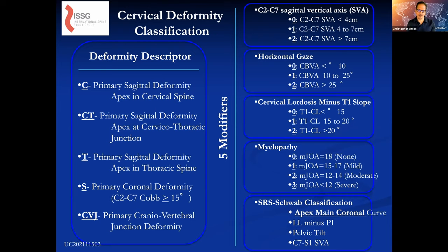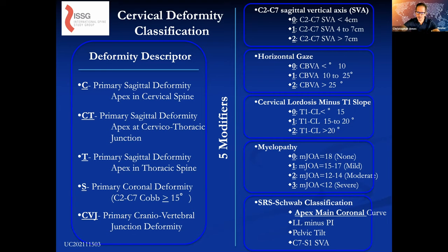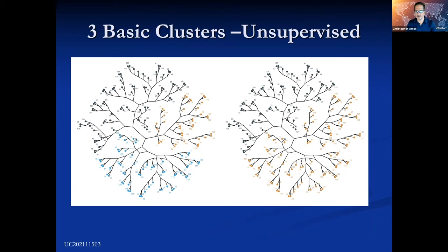I want to have enough time at the end to talk about treatment, so I'm not going to belabor all aspects of the classification. Essentially on the left we have apex location — I showed you how to determine that. On the right we have the modifiers that have a clinical impact. This is how we initially put together, from those widely varying initial images of cervical deformity, a way to make sense of it.